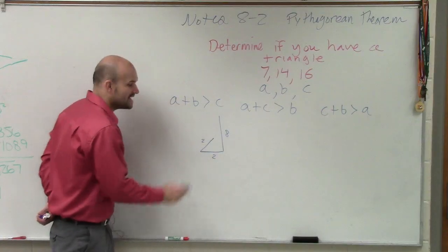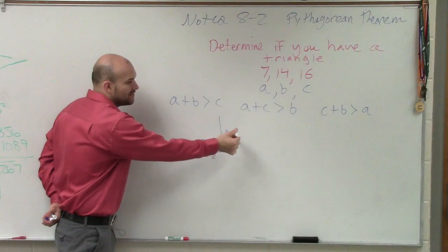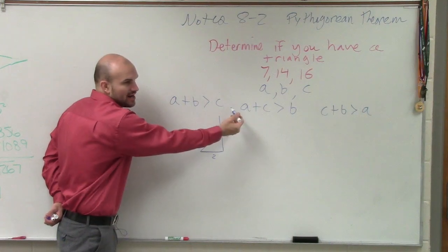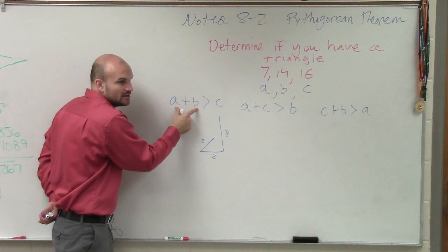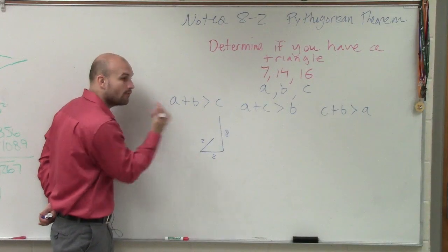So that's what we're saying: these two sides, when I add these two sides, it has to be greater than the third side for it to produce a triangle. So any two sides of a triangle, when you add them up, have to be greater than the third side for it to be a triangle.